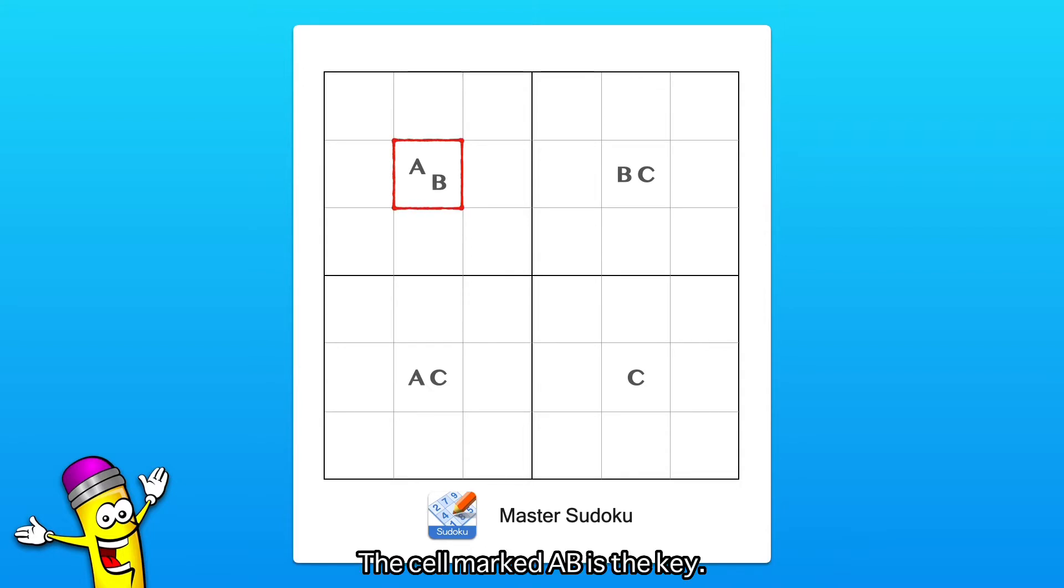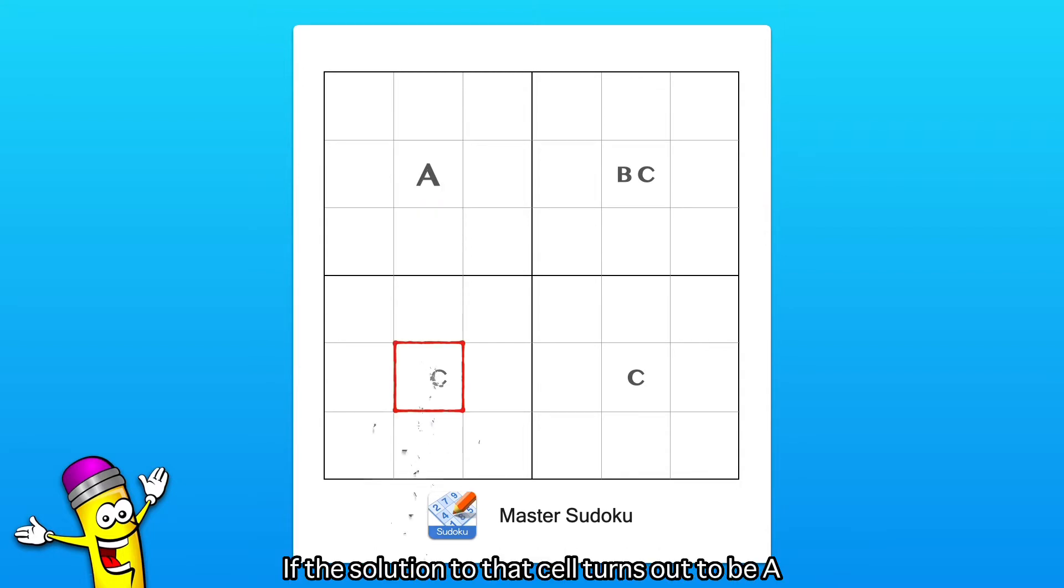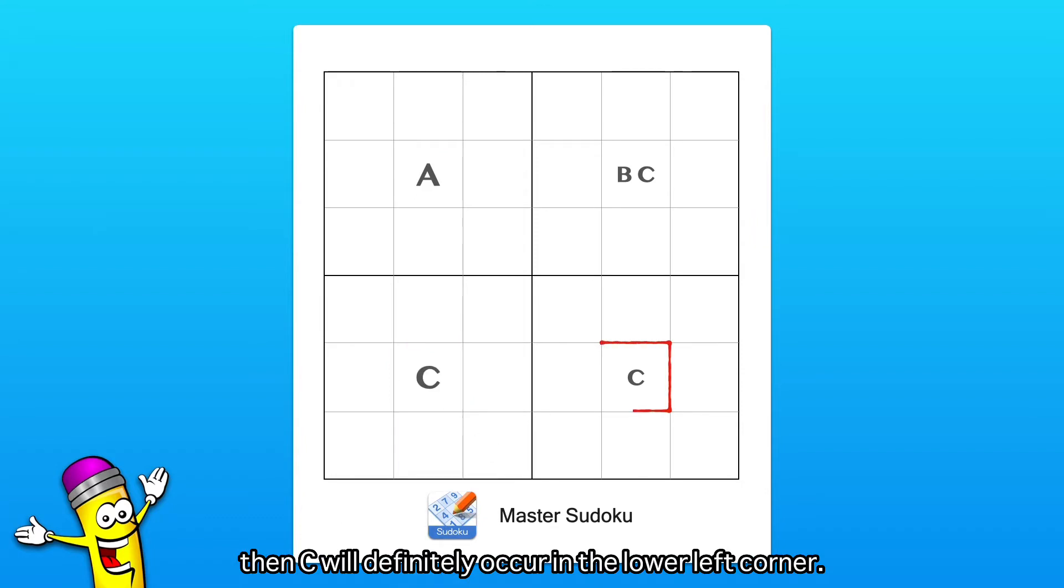The cell marked A, B is the key. If a solution to that cell turns out to be A, then C will definitely occur in the lower left corner.